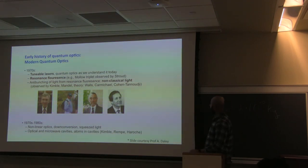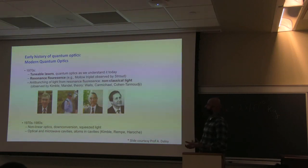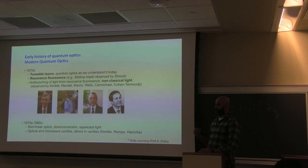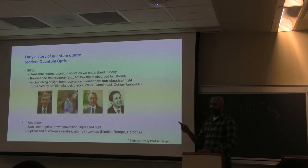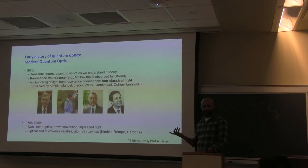All of these developments in quantum optics — including understanding the states of light and better understanding of spontaneous emission — led to the development of tunable lasers. You have to understand that until about the 1960s and 1970s, we didn't have lasers. Many things we take for granted now, like being able to scan a laser across the resonance of an atom and look at its spectrum and fluorescence, were enabled by tunable coherent light sources like lasers.